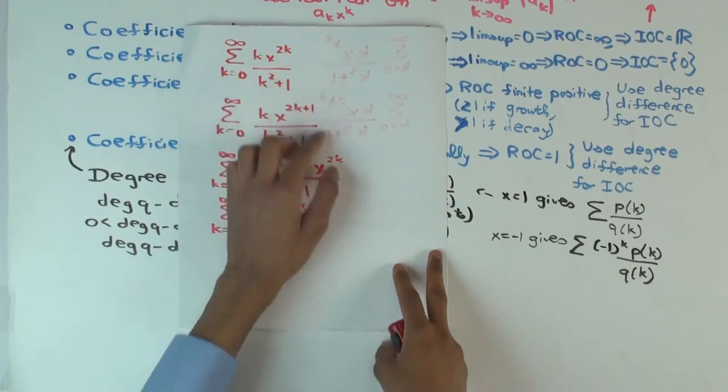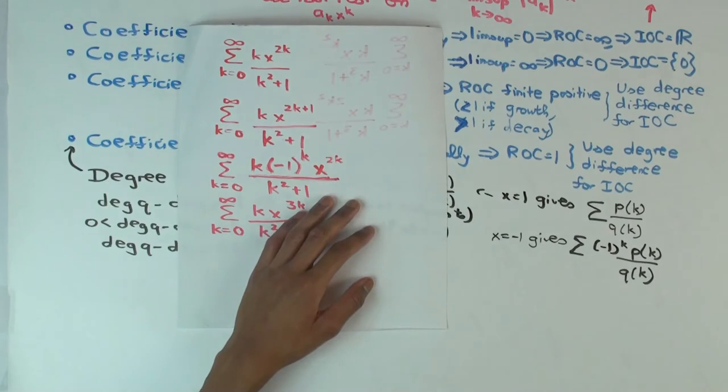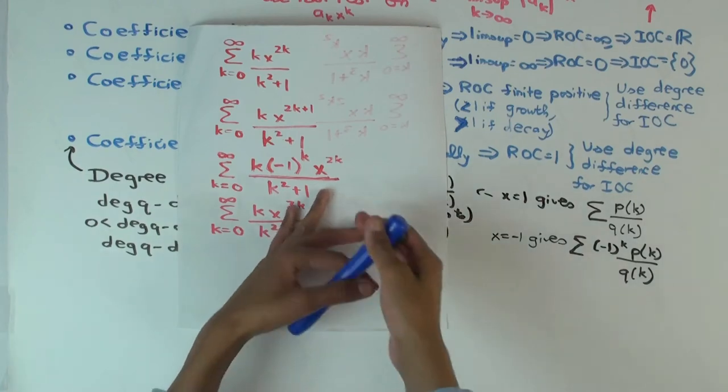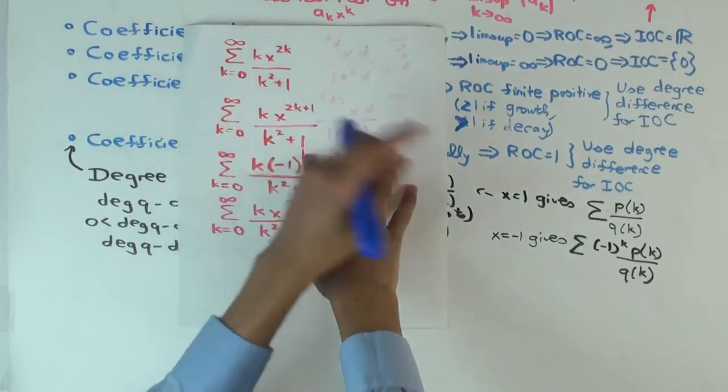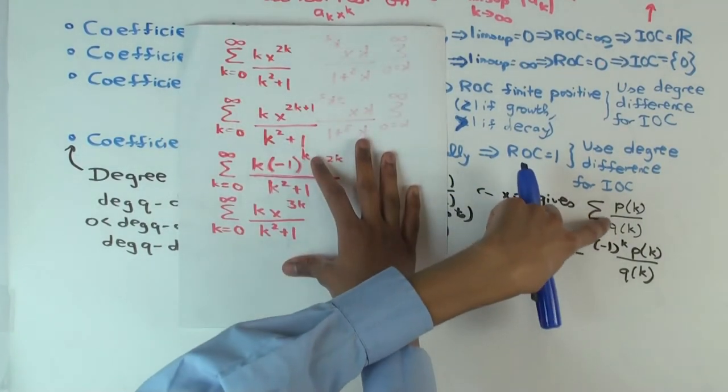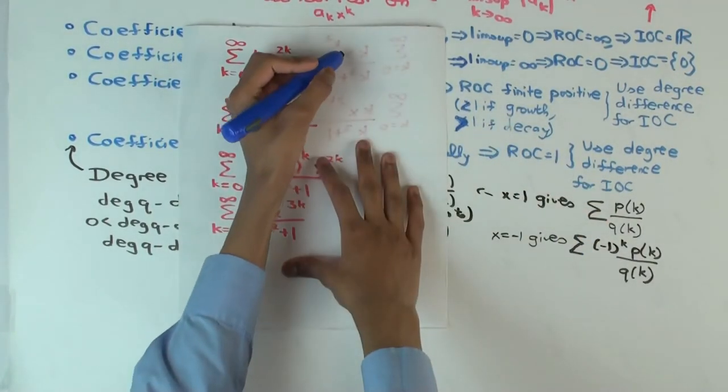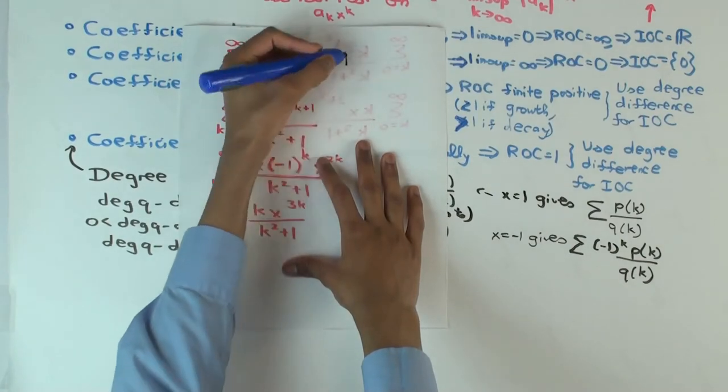So, what's the interval of convergence? Do you include minus one and do you include one? Well, do you include one? What's the degree difference? One. So when you plug in x equal to one, what do you get? You get a summation of a rational function in k. So one is not included.